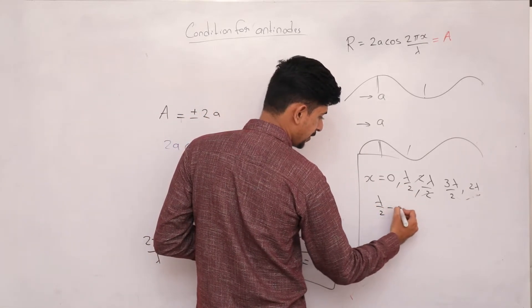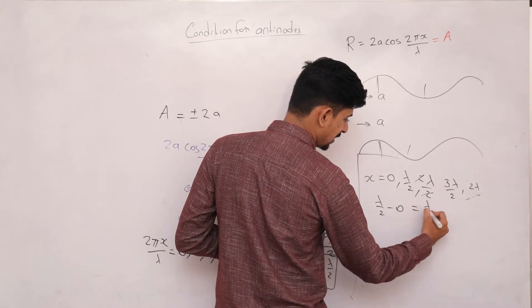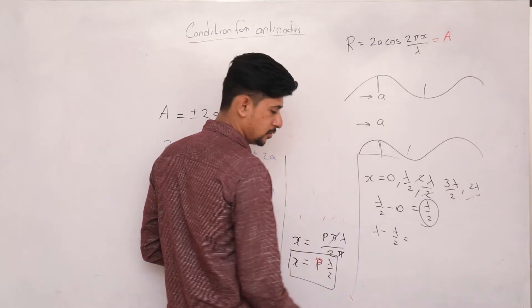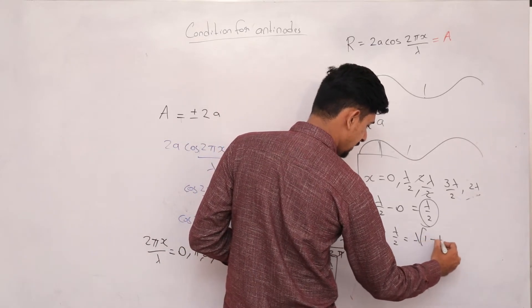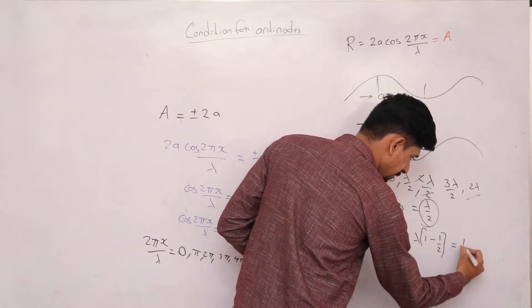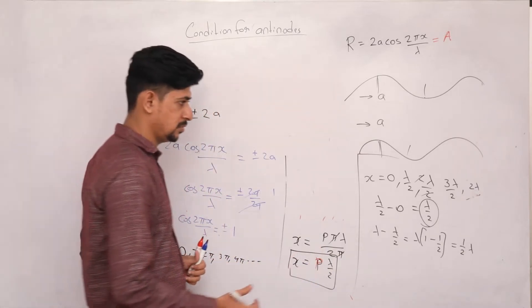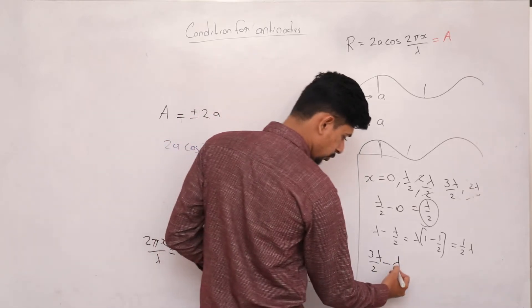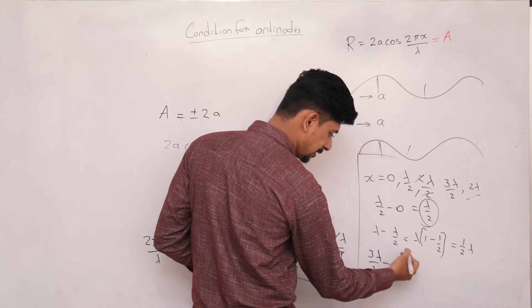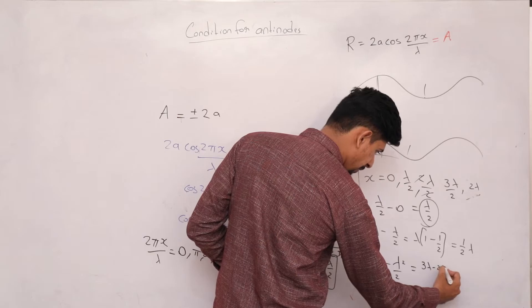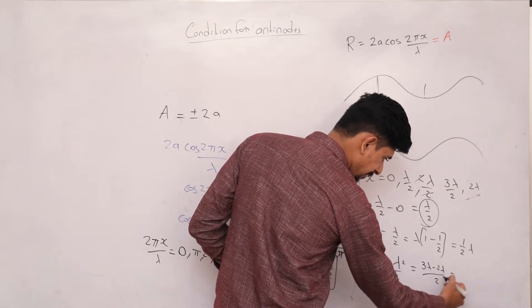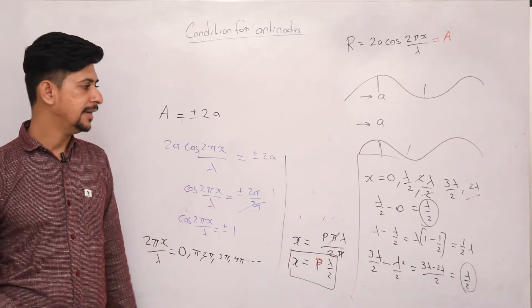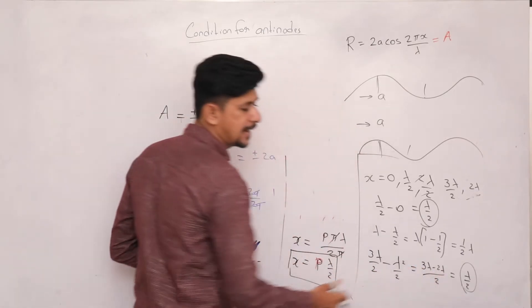Let's find the distance between two successive anti-nodes. Taking λ/2 minus 0 gives λ/2. Then λ minus λ/2 = λ/2. Then 3λ/2 minus λ = λ/2. So the distance between two successive anti-nodes is always λ/2, which we also saw logically in the diagram.